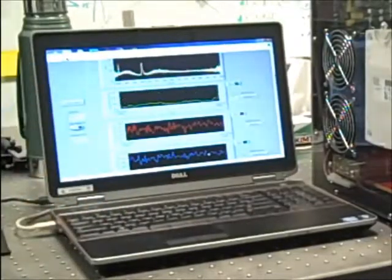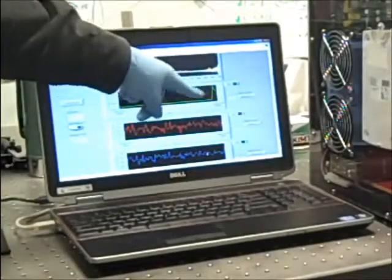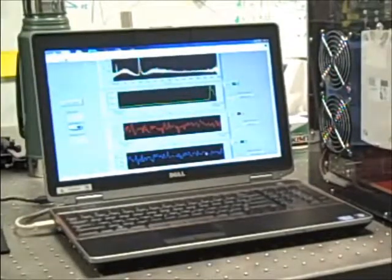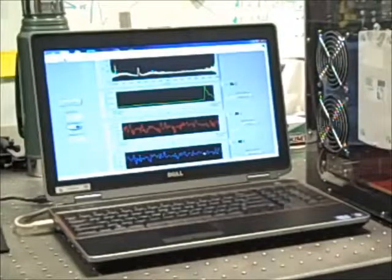The unique spectral signature of methanol enables identification, and the strength of the signal is used to measure the concentration. Note that the concentration plots are set to autoscale, and their appearance changes when a higher concentration is present.